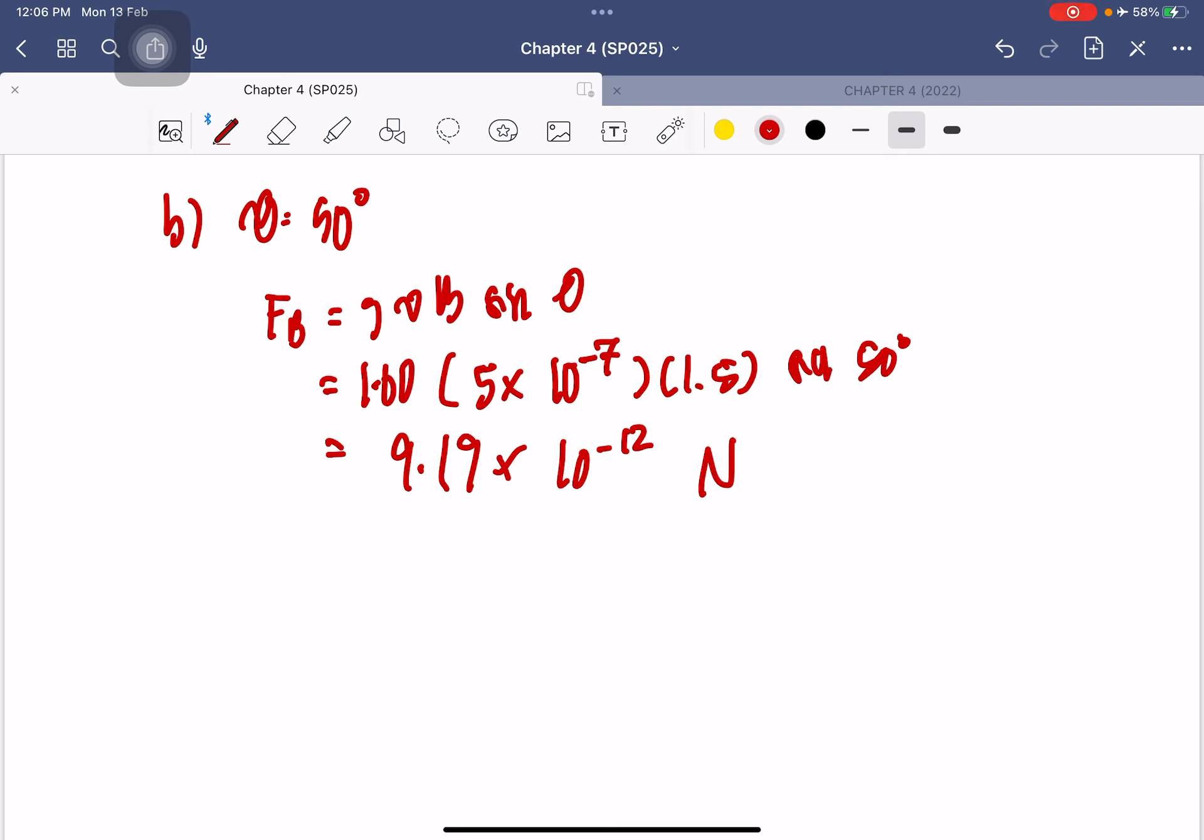Yeah, you should put... oh, I forgot this. 1.6 × 10^-19, this is 5 × 10^-7, 1.5, sin 50 degrees. Then I think you should get the correct answer. Yes, 9.19 × 10^-12.